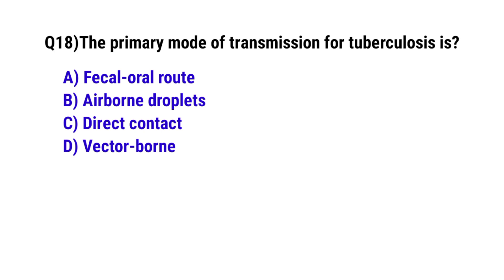Question number 18. The primary mode of transmission of pertussis is. The correct option is B: airborne droplets.